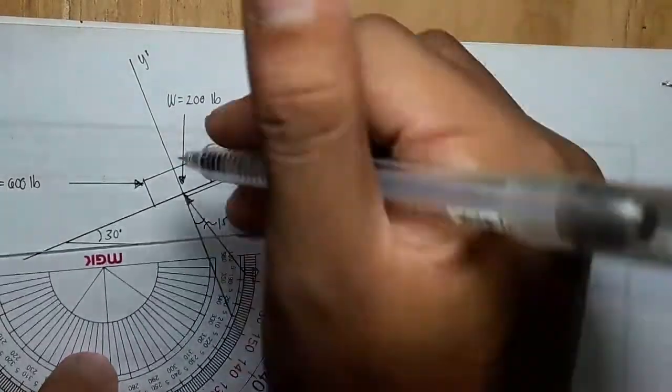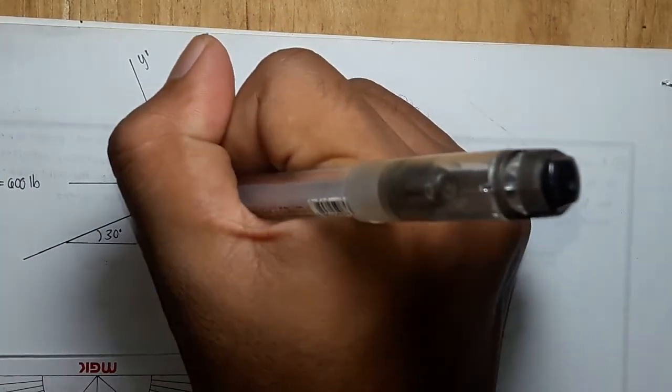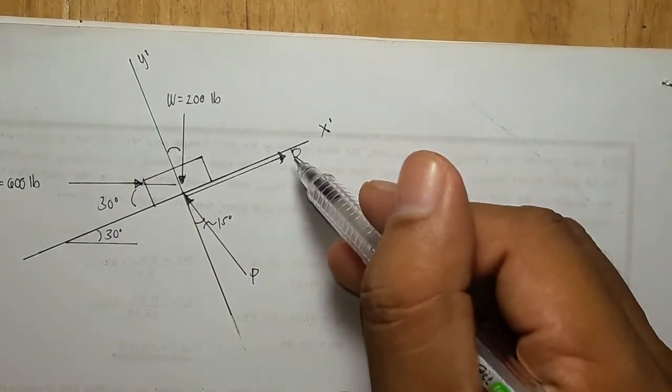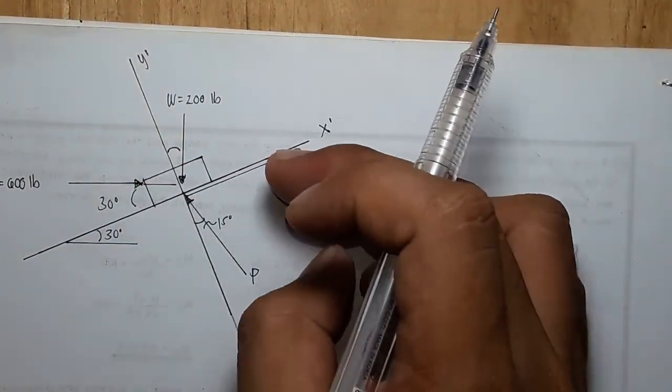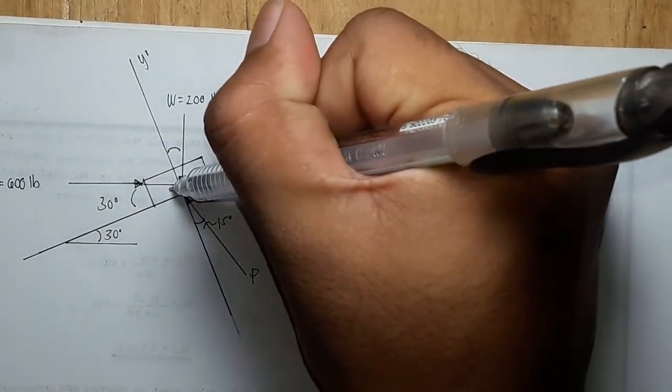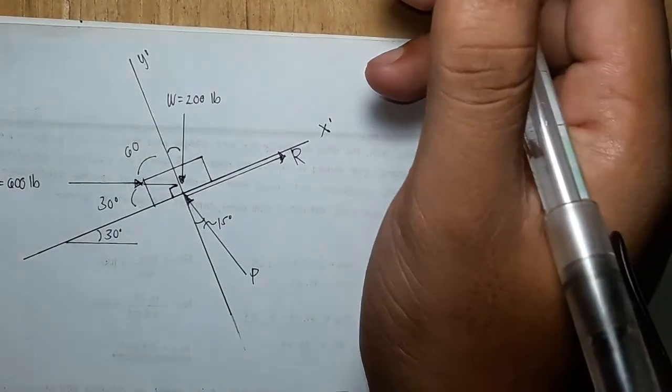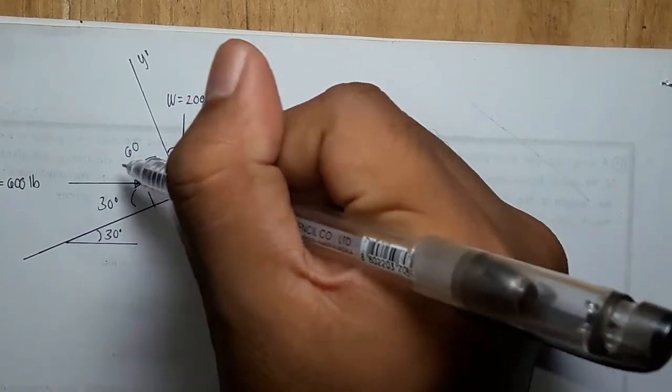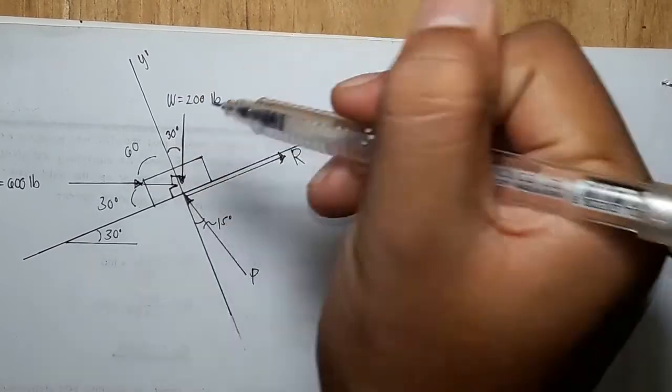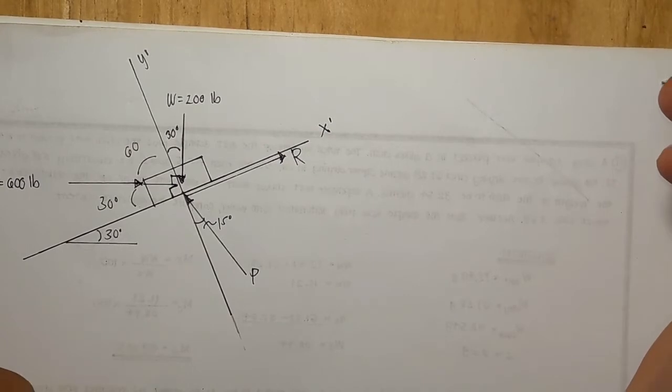We would like to know the angles here. This is just 30 degrees because this axis is crossing two parallel lines, so this is just 30. This is perpendicular so this will be 60, and the 600 is perpendicular also so this will be 30 degrees. So we already have the angles.